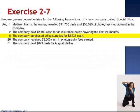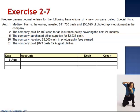August 5th, the company purchased office supplies for $2,233 cash. This transaction increases one asset, office supplies, by $2,233 and decreases another asset, cash. This transaction is restricted to the balance sheet.